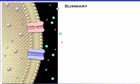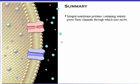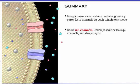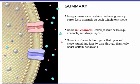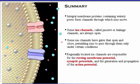Here's a summary of what we've covered. Integral membrane proteins containing watery pores form channels through which ions move. Some ion channels, called passive or leakage channels, are always open. Some ion channels have gates that open and close, permitting ions to pass through them only under certain conditions. Regionally located ion channels are responsible for the resting membrane potential, synaptic potentials, and the generation and propagation of the action potential.